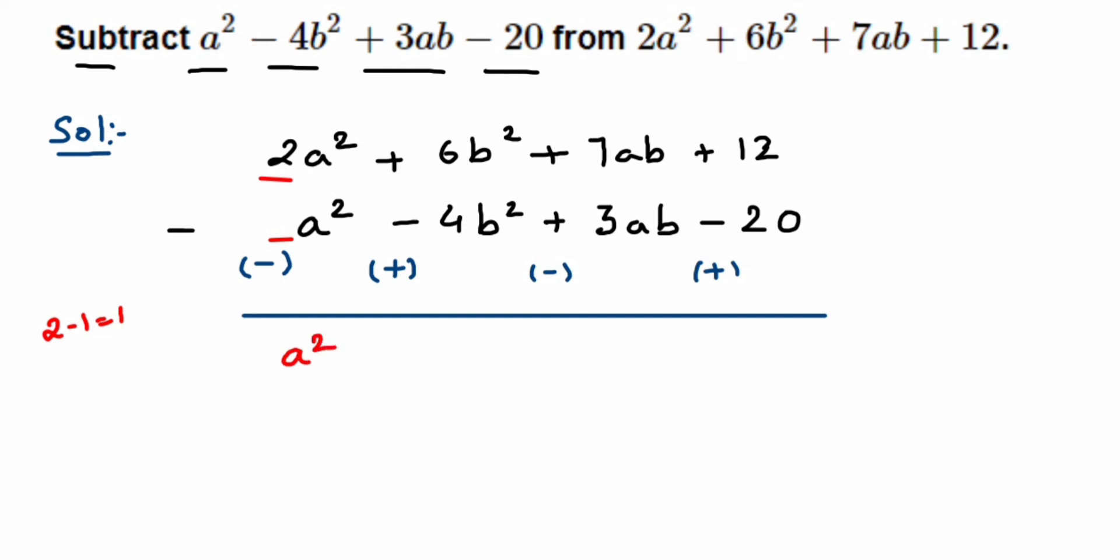Next I have +6 + 4. It will be plus - take the second sign, not the original one, so it will be +10b². Next I have +7ab and -3ab, so 7 - 3 will be 4. 7 is positive, so it will be 4, so we'll get +4ab.